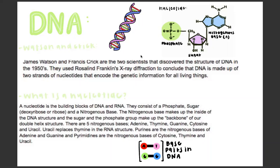A nucleotide is the building block of DNA and RNA. They consist of a phosphate, sugar, deoxyribose or ribose, and a nitrogenous base. The nitrogenous base makes up the inside of our DNA structure and the sugar and phosphate group make up the backbone of our double helix structure.